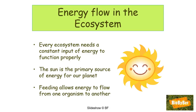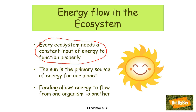Energy flow in the ecosystem is a very important concept that we will meet time and time again. Every ecosystem needs a constant input of energy to function properly — all of the energy in the ecosystem comes from the Sun. The Sun is the primary source of energy for our planet, and feeding allows the energy to flow from one organism to another.